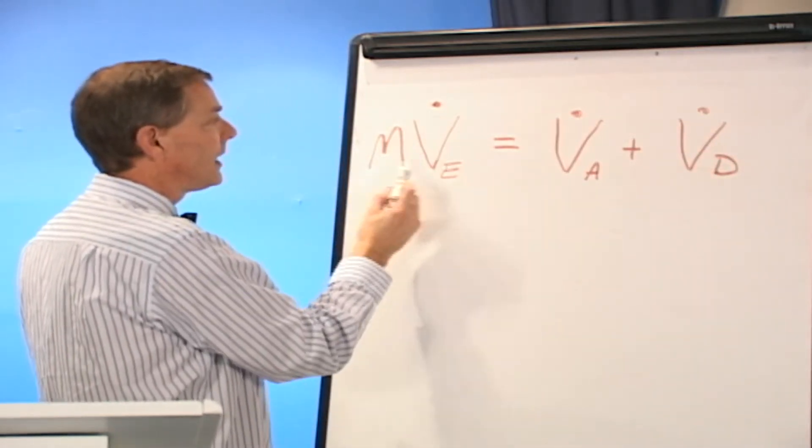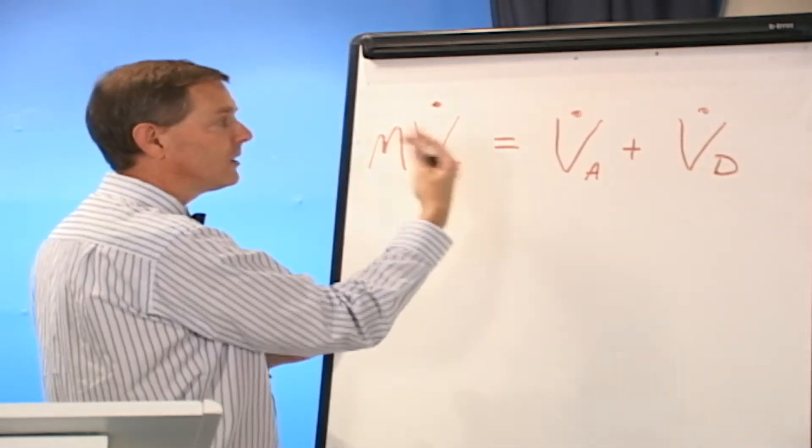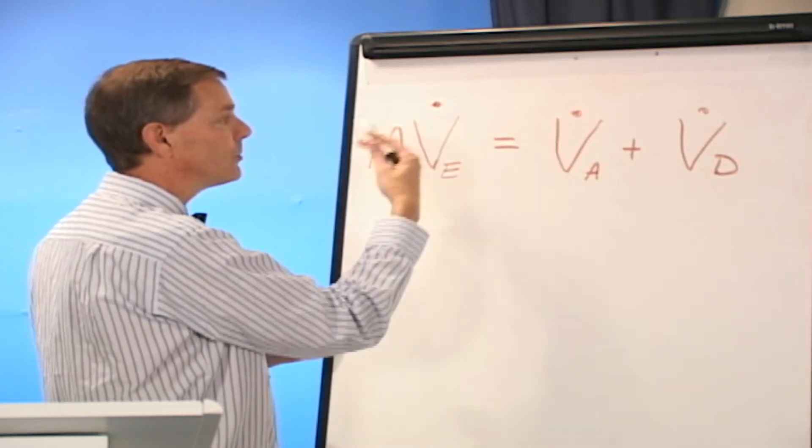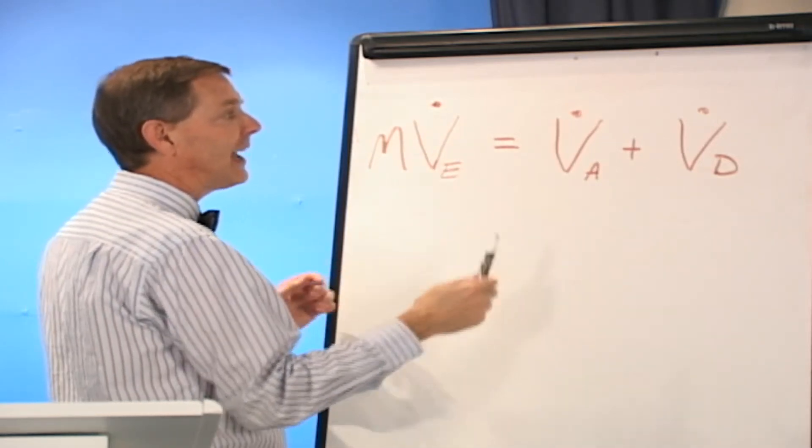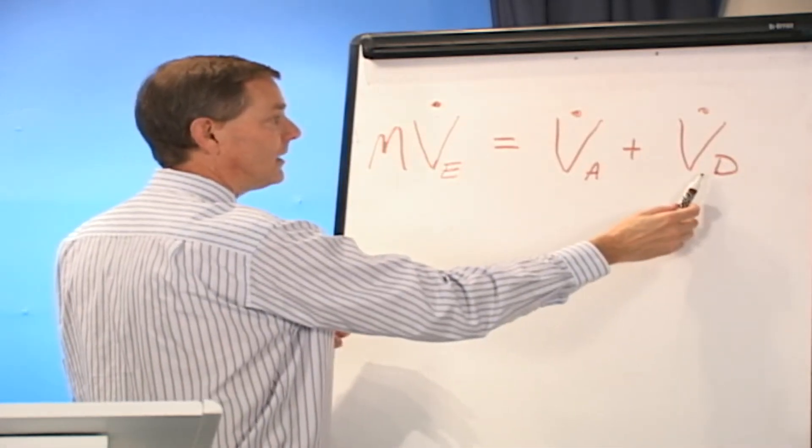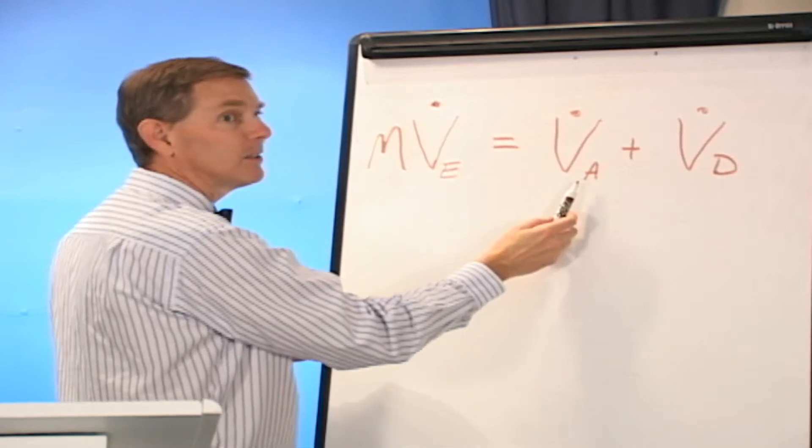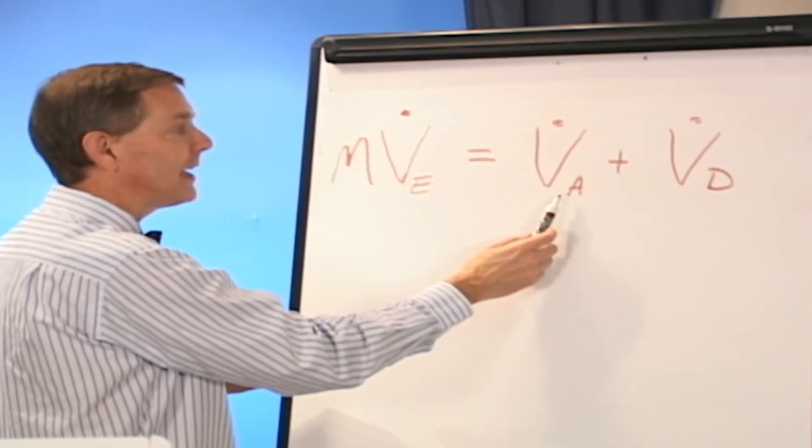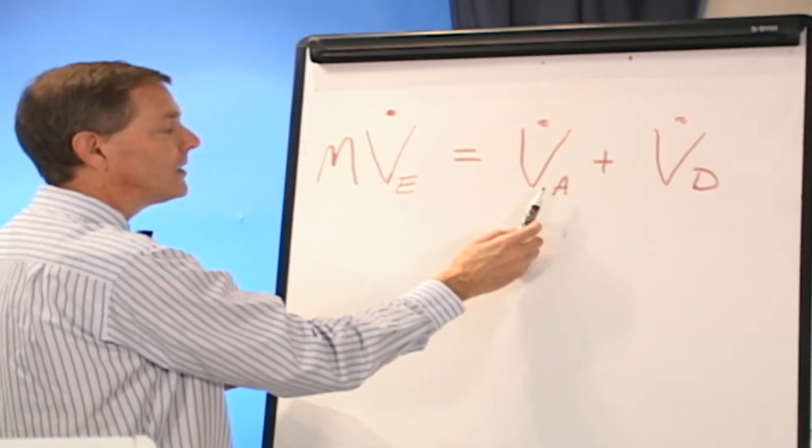Remember, the minute ventilation, expired air that we're moving over time, liters per minute, will be made up of that which is going through just the conducting zone, which we call dead space. And remember about 70 percent or so reach the alveolus.